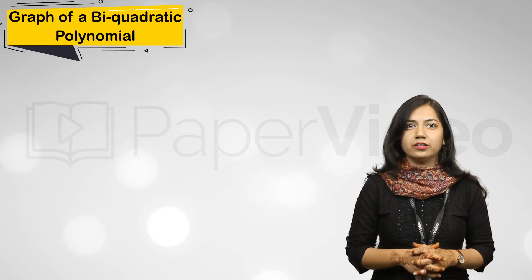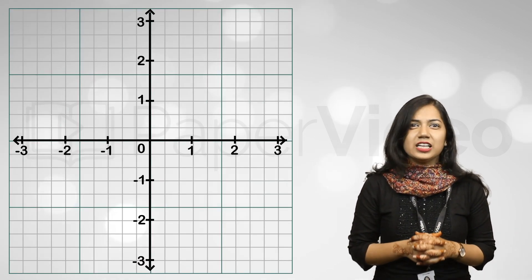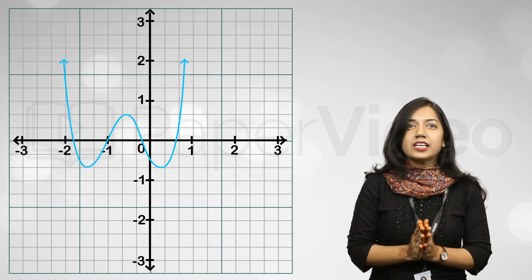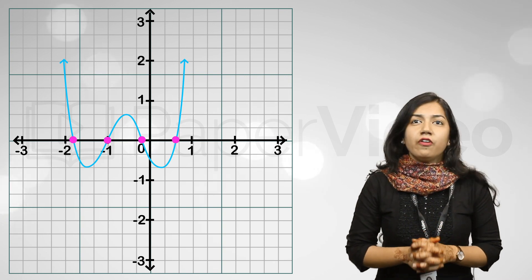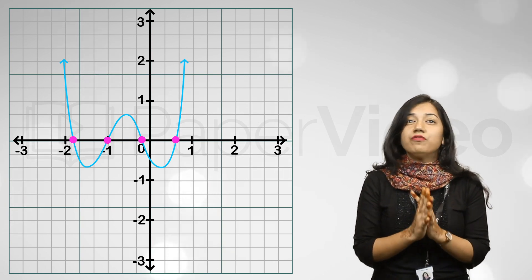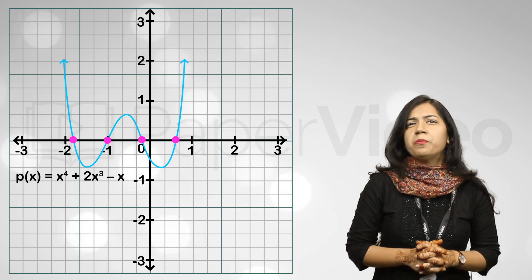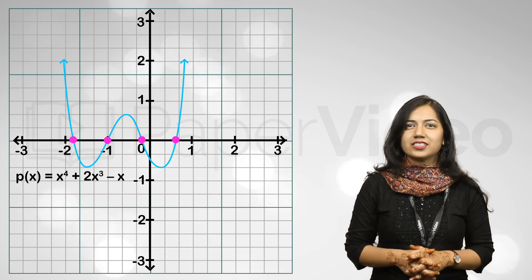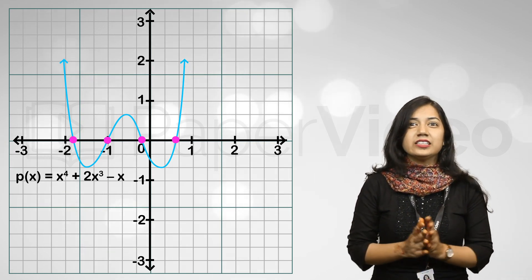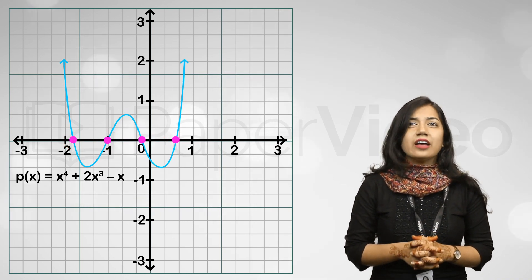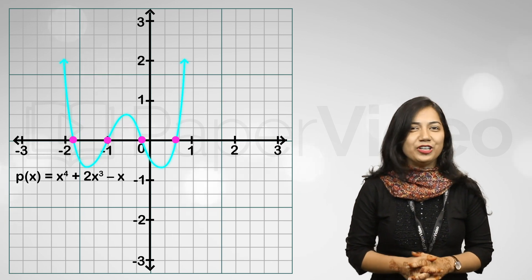Let us now understand the graph of a biquadratic polynomial. A biquadratic polynomial has degree 4. This means that the graph of a biquadratic polynomial will look like this, which intersects the x-axis four times. For instance, this is a graph of biquadratic polynomial p(x) = x⁴ + 2x³ − x. Clearly, we can see that this intersects the x-axis at four points. Such type of graphs are the general graph of a biquadratic polynomial.